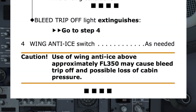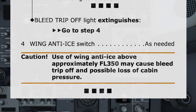Step 4 indicates that the wing anti-ice switch can be used as needed. The caution message states that use of wing anti-ice above approximately flight level 350 may cause bleed trip-off and possible loss of cabin pressure. We are already below that altitude. The four black boxes below indicate that the checklist has now been completed.